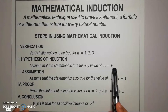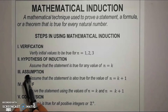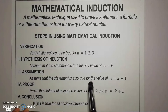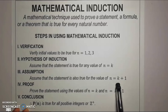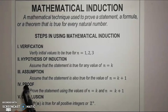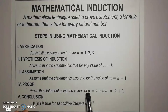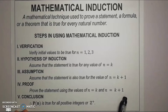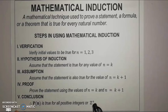The third step is the assumption — we need to assume that the statement is also true for the value of n equal to k plus 1. The fourth step is the proof — we need to prove the statement using the values from n equal to k and n equal to k plus 1, so that we can conclude that P(n) is true for all positive integers, denoted by the symbol Z raised plus.